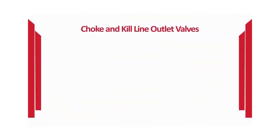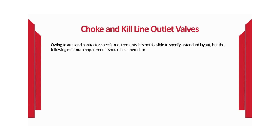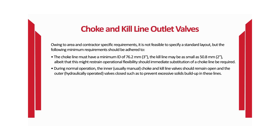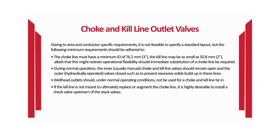Choke and kill line outlet valves. Due to area and contractor-specific requirements, it is not feasible to specify a standard layout, but the following minimum requirements should be adhered to. The choke line must have a minimum ID of 76.2 mm (3 inches). The kill line may be as small as 50.8 mm (2 inches), although this might restrain operational flexibility. During normal operation, the inner manual choke and kill line valves should remain open, and the outer hydraulically operated valves closed, to prevent excessive solids build-up in these lines. If the kill line is not meant to replace or augment the choke line, it is highly desirable to install a check valve upstream of the stack valves.